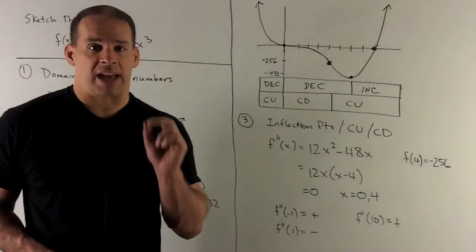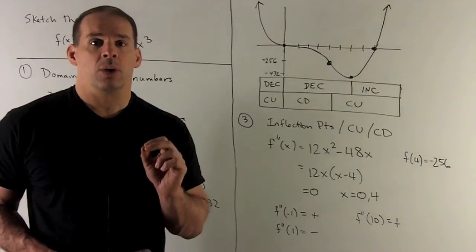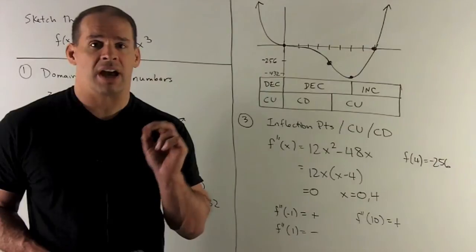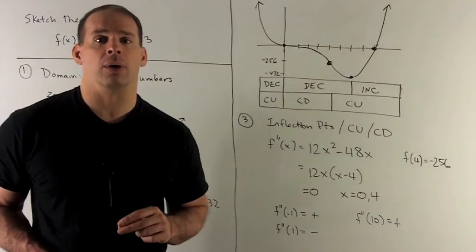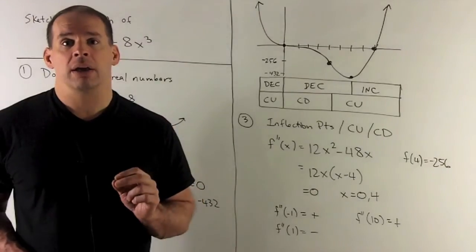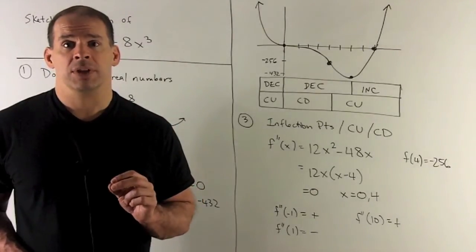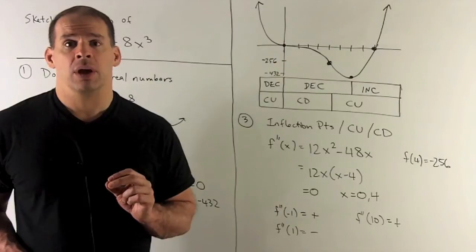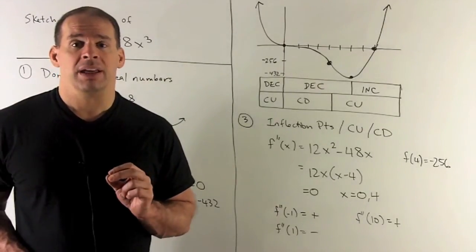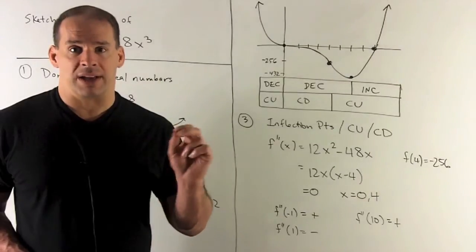Next, the second derivative. Here, we're looking for inflection points and regions of concave up or concave down. I take our second derivative, we get 12x^2 - 48x. We can factor out a 12x, what's left over is x - 4. So our zeros are going to be x = 0, x = 4.